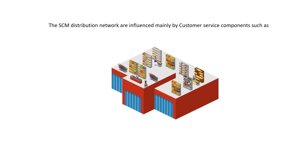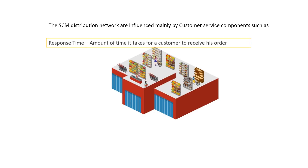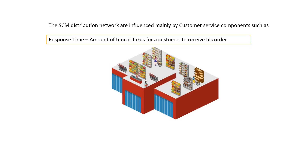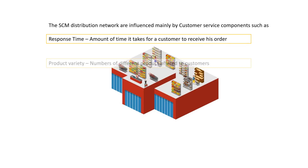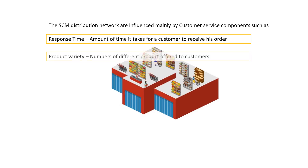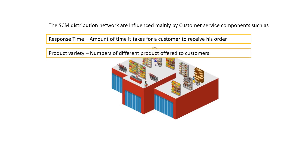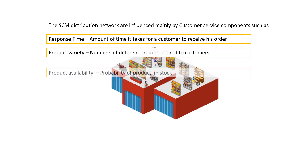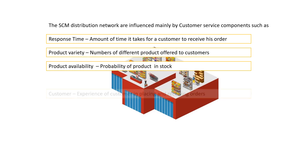The SCM distribution network is influenced mainly by customer service components such as: response time — the amount of time it takes for a customer to receive his order; product variety — the number of different products offered to customers; product availability — the probability of a product being in stock; and customer experience — the experience of a customer in placing and receiving orders.